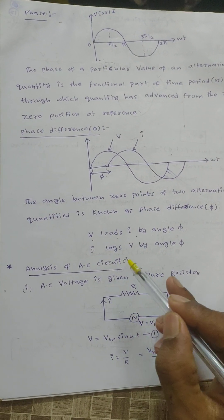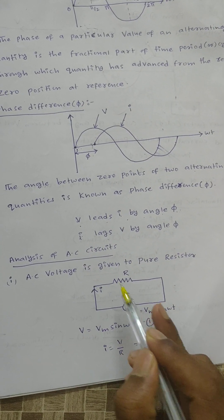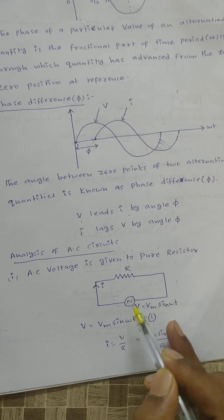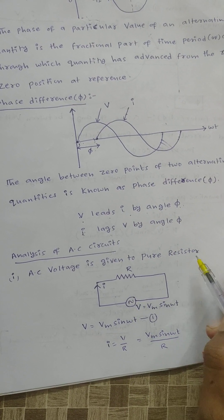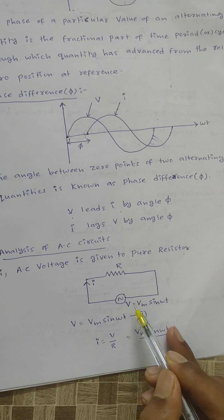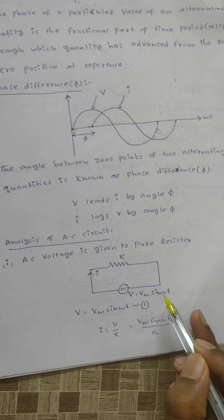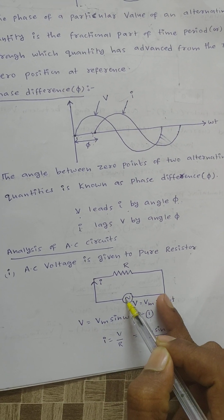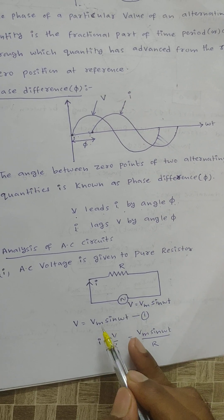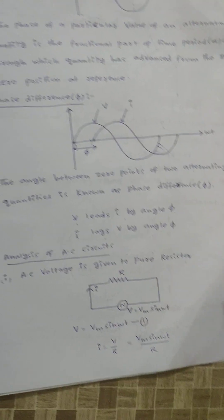Now we will discuss about analysis of AC circuits. Let us consider a resistor R and apply AC voltage to this pure resistor. The instantaneous value of voltage is V = Vm sin(ωt). Because of this voltage, current I is flowing into the circuit.